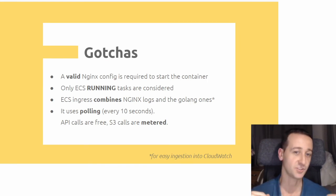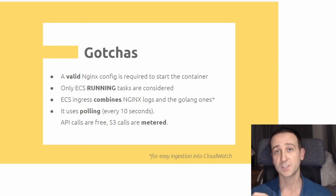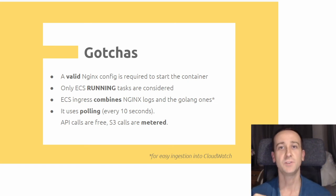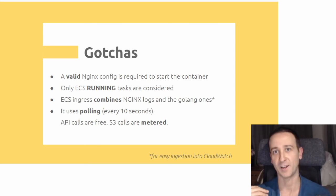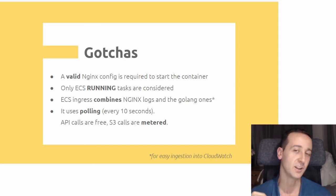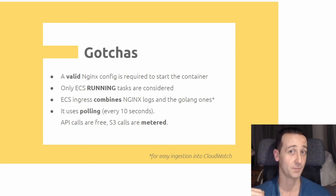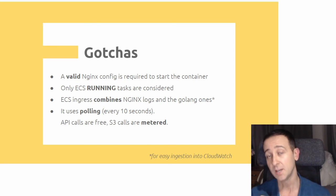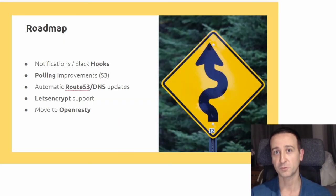What are the gotchas of using this tool? It's important to understand that a valid Nginx configuration is required to start the container — if you don't have a starting configuration the container will continuously crash. Also, among the tasks available for a service, only running tasks are considered, so complex blue-green deployments with multiple versions of the same application running simultaneously may not work. ECS Ingress combines Nginx logs with the Go ones, making ingestion into CloudWatch easy. Under the hood it uses polling every 10 seconds to query the ECS cluster via APIs, and both these API calls and S3 calls are metered.